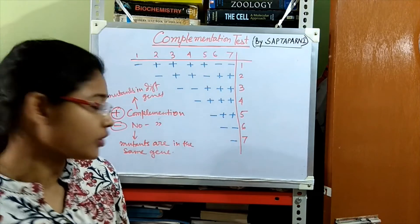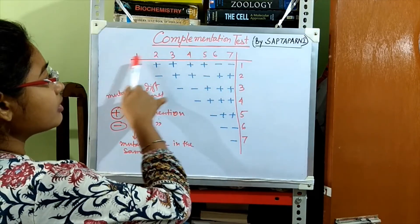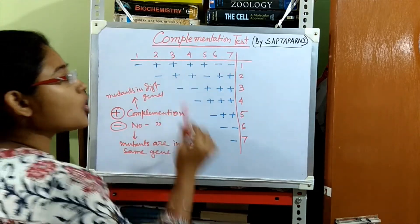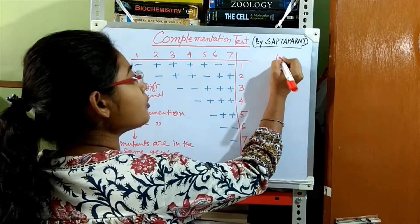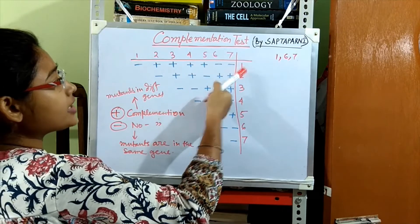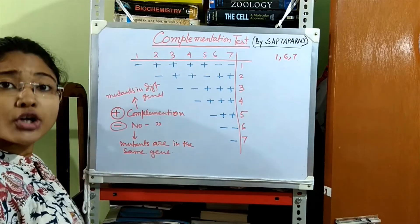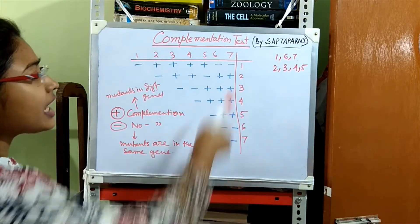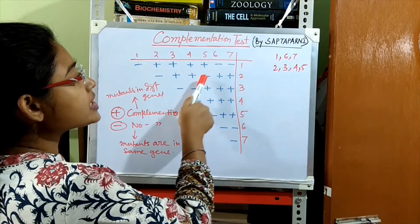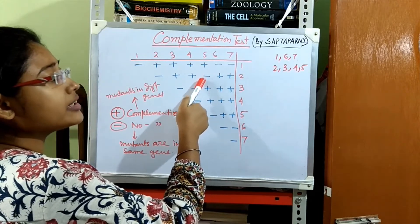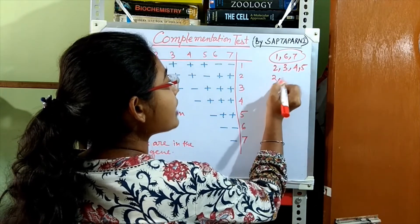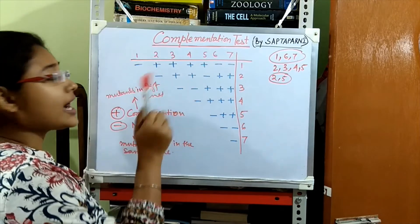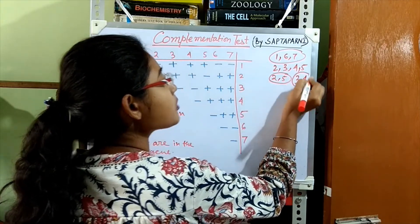Now, let's find the complementation groups. From the first row, mutation 1 is not complementary with 6 and 7, so 1, 6, and 7 are present in the same gene and can be grouped together. But mutation 1 is complementary with 2, 3, 4, and 5, meaning 1 is not in the same gene as 2, 3, 4, or 5. From the second row, mutation 2 is non-complementary with 5, meaning 2 and 5 are in the same group.